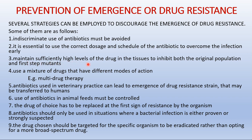Third, maintain sufficiently high levels of the drug in the tissues to inhibit both the original population and faster-step mutants. Fourth, use of multi-drug therapy should be given such that drugs act in different modes of action. Fifth, antibiotics used in veterinary practice can lead to the emergence of drug-resistant strains that may be transferred to humans. The incorporation of antibiotics in animal feeds must be controlled, as this increases drug-resistant strains and affects farm workers as well.